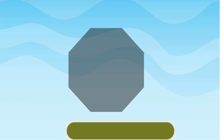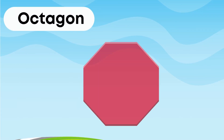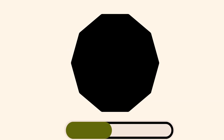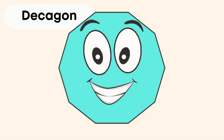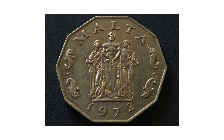Which shape is this? This is an octagon. Octagon. Which shape is this? This is a decagon. Decagon.